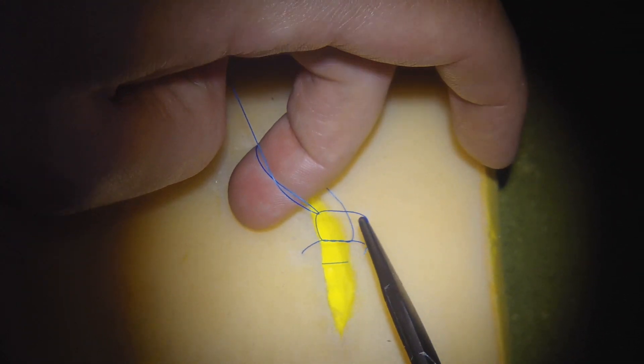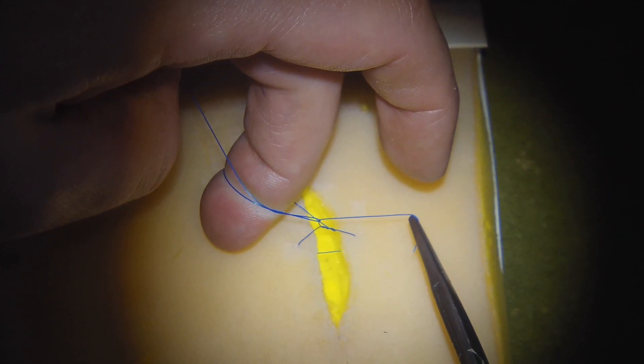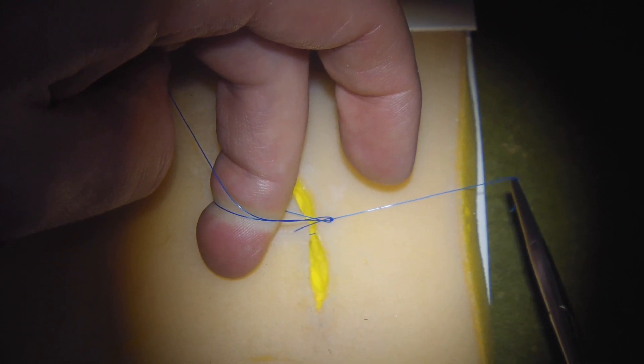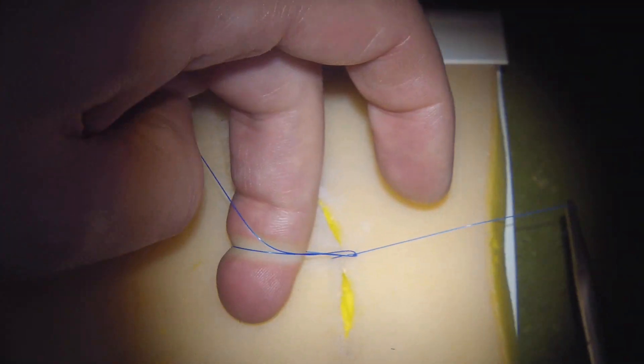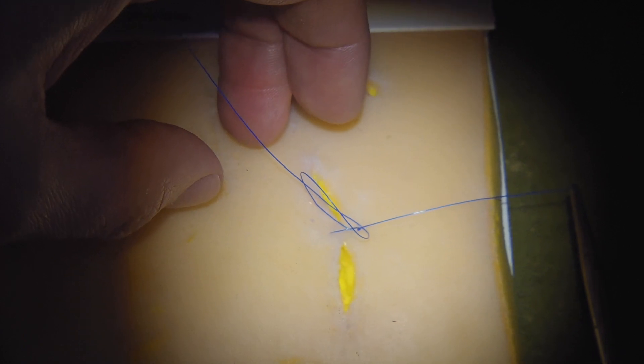And then we apply a little tension on the needle holder end. And that then brings the wound together like a pulley. Okay, we keep that tension on the needle holder end. And you can actually slip your finger out of the loop now, the tension's still there.